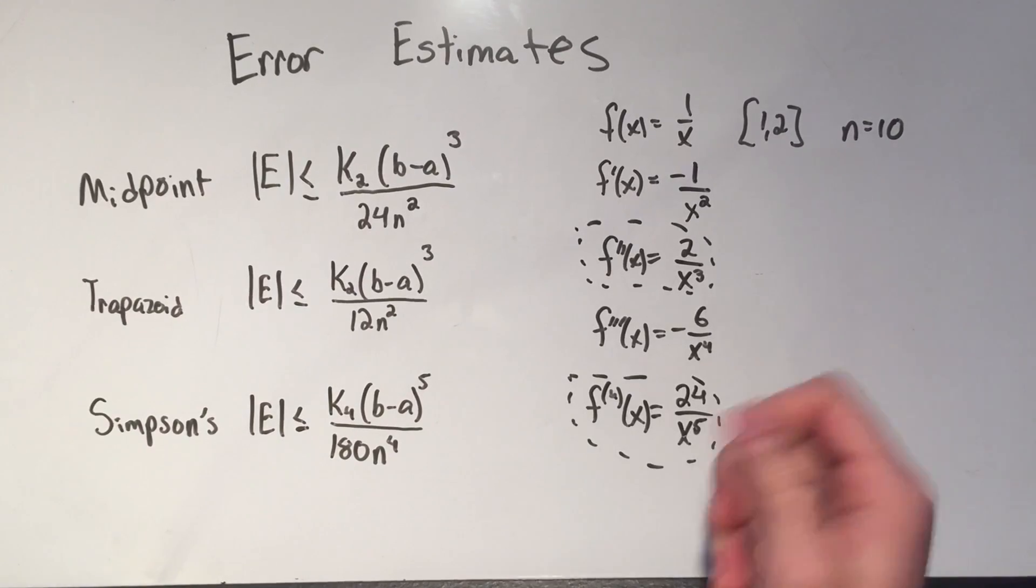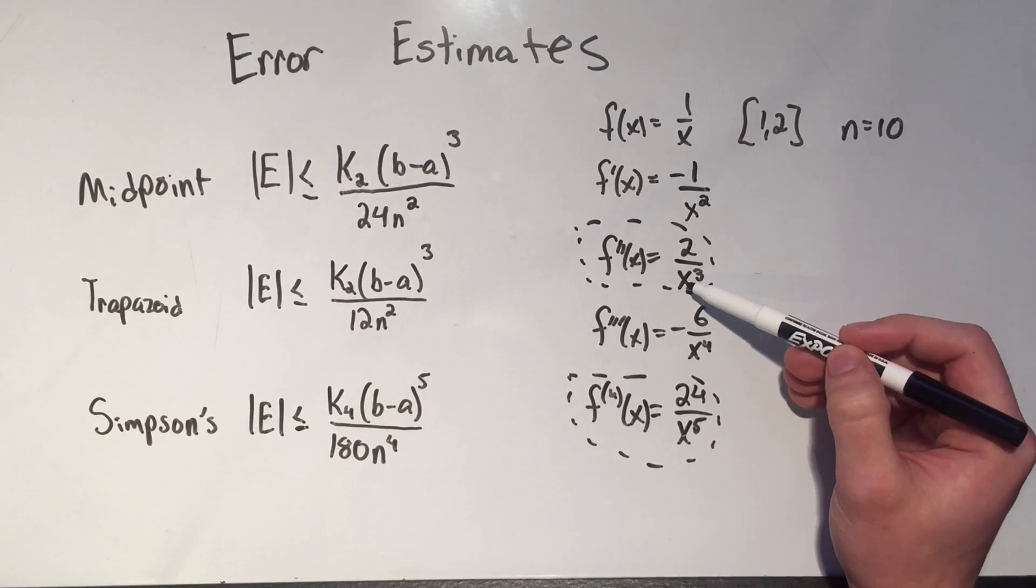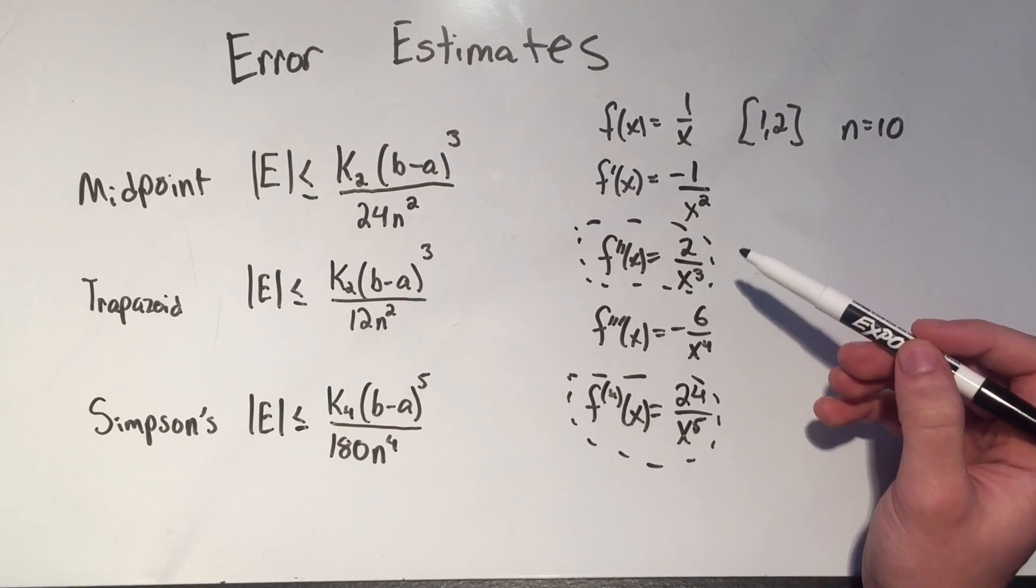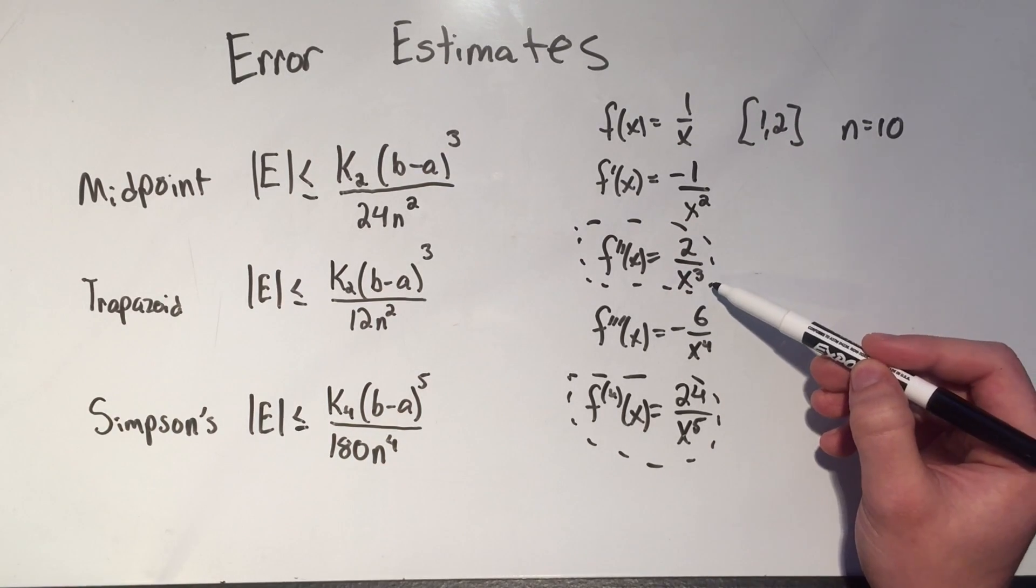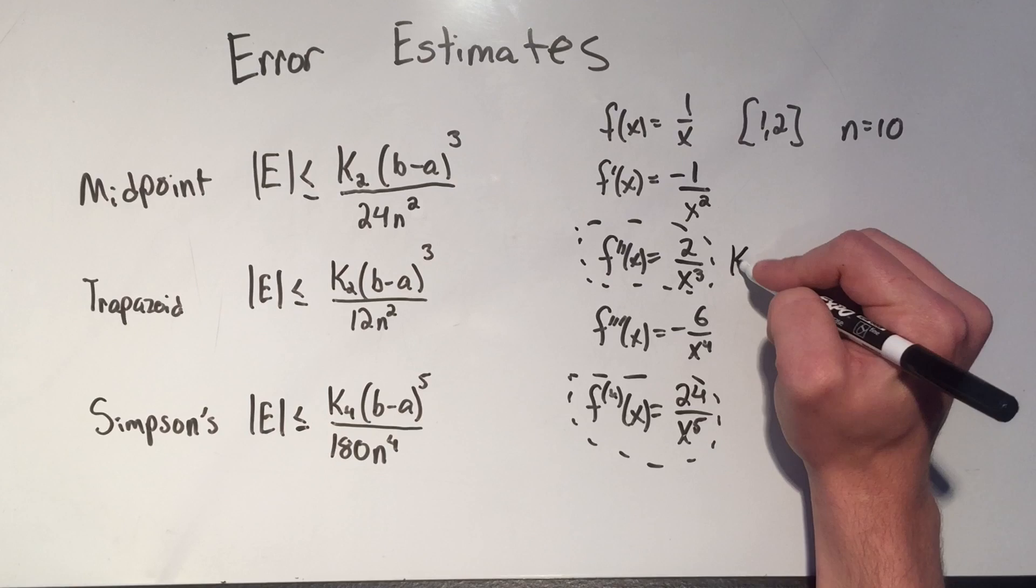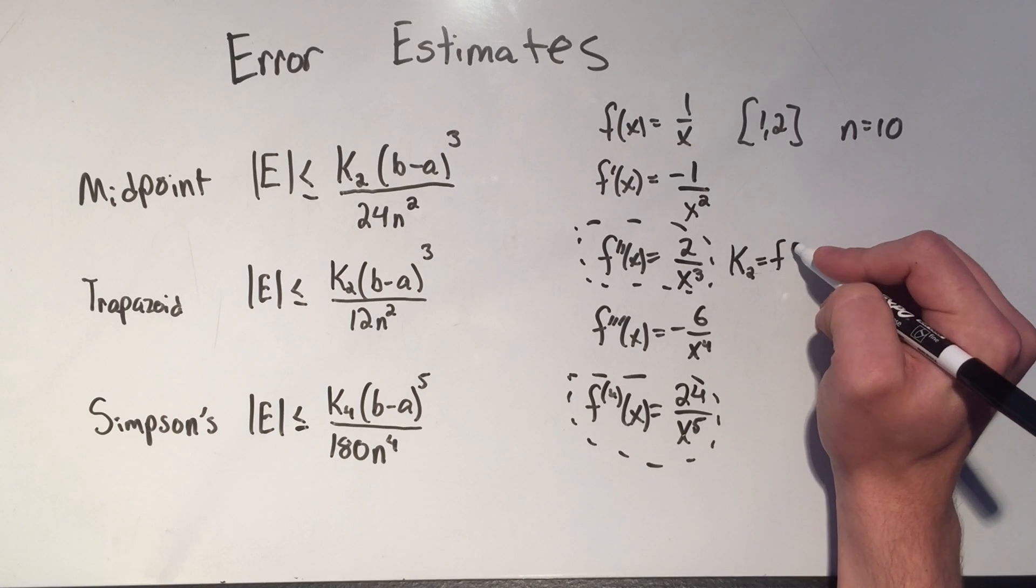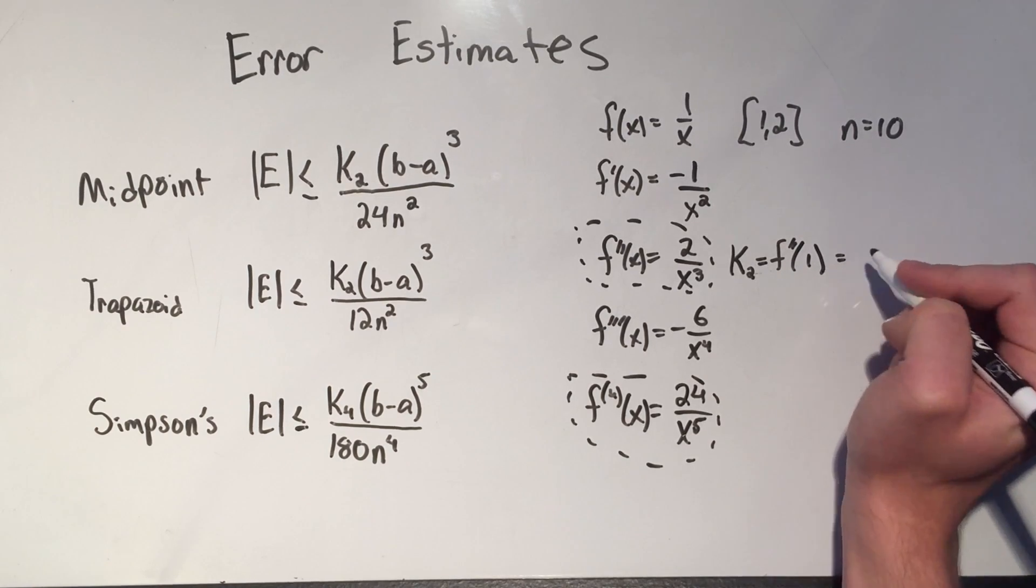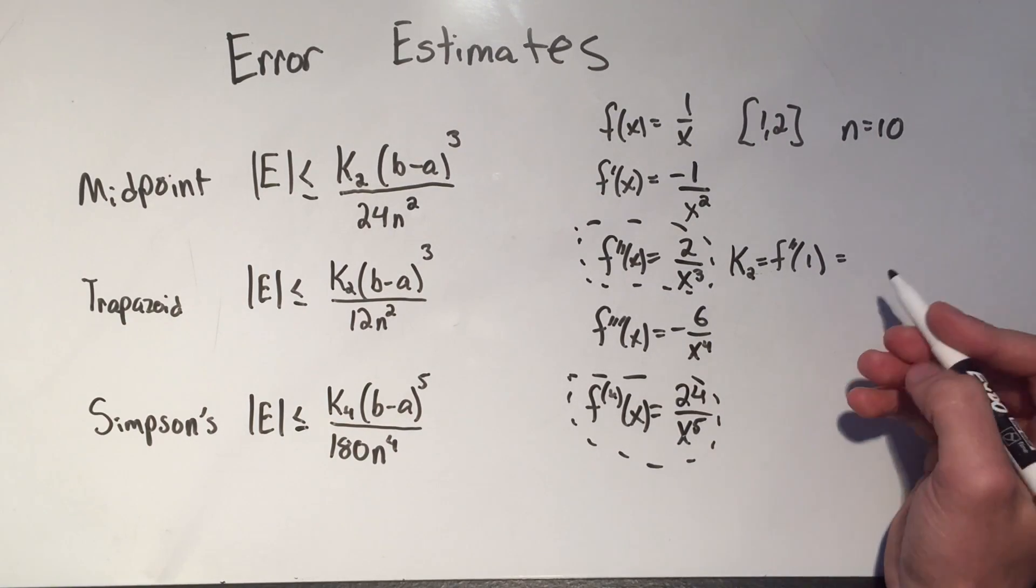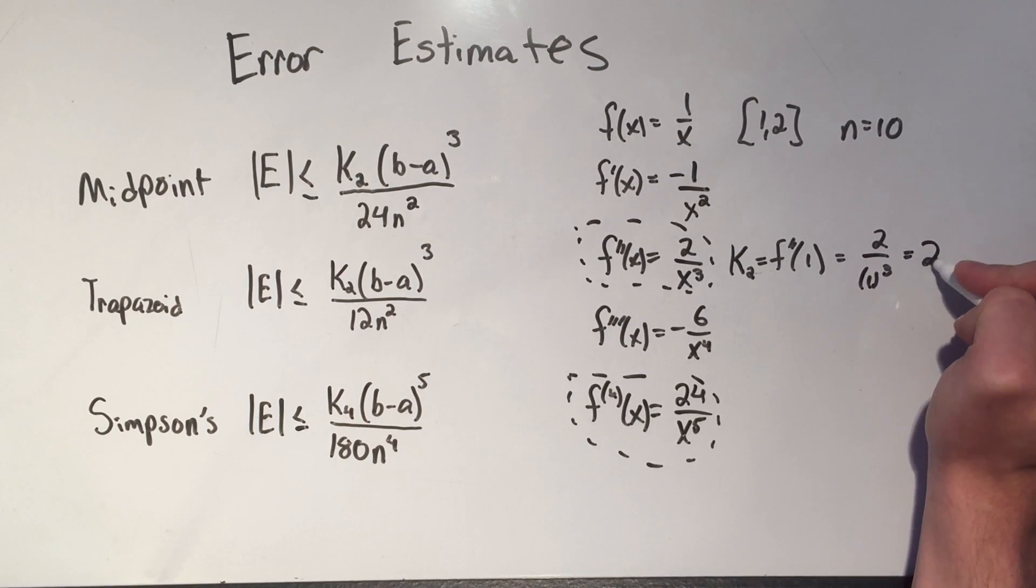Well notice, if I plug in bigger numbers for x, the denominator would be getting bigger, and if the denominator is getting bigger, well my function is getting smaller, isn't it? Or in other words, this function is decreasing, which means the smaller value I plug in for x, the larger value my function would be. So that means that k₂ is my second derivative evaluated at one, because one is the smallest thing I can plug in here, and that's going to give me the biggest number. And if I plug in one, that's two over one cubed, that's just two.